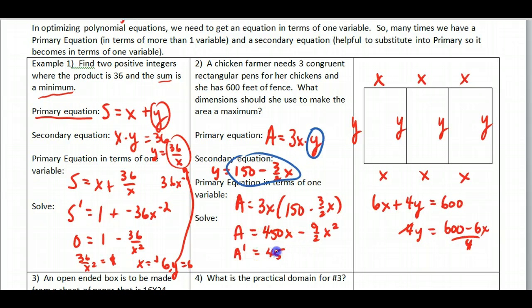A prime, so I get 450 minus 9x. Set this equal to 0 because this is how we optimize. I'm going to get x is equal to 50.